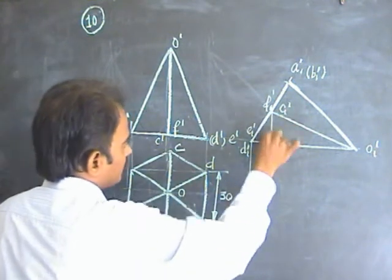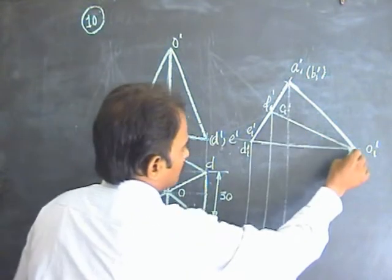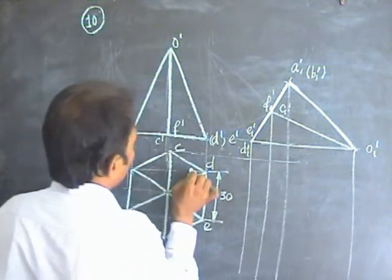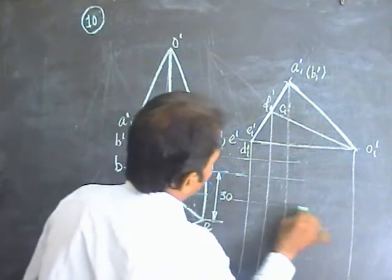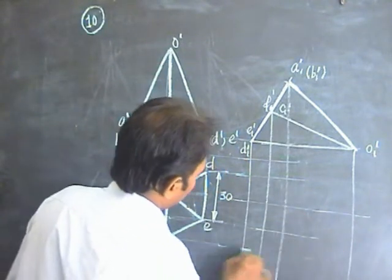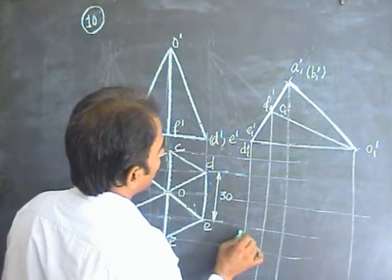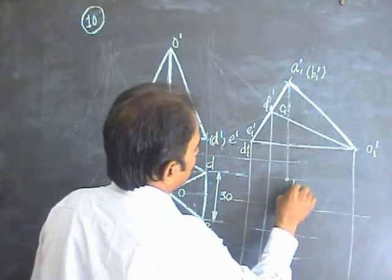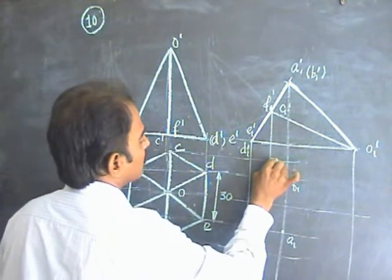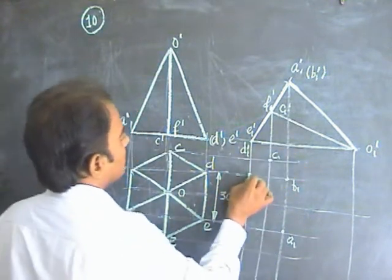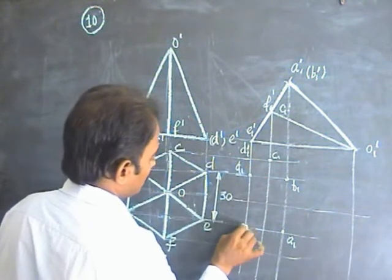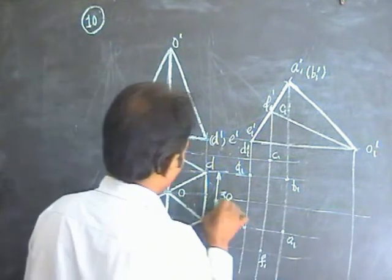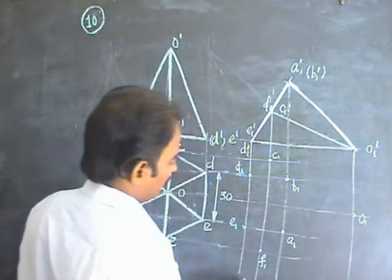Now project these points to get the final top view. A horizontal and A vertical gives you A1. B horizontal and B vertical gives you B1. C horizontal and C vertical gives you C1. D horizontal and D vertical gives you D1. E horizontal and E vertical gives you E1. F horizontal and F vertical gives you F1. O horizontal and O vertical gives you O1.